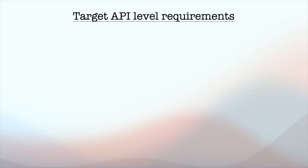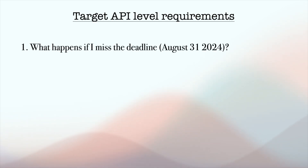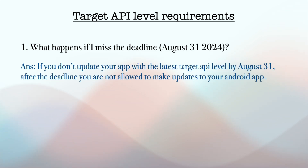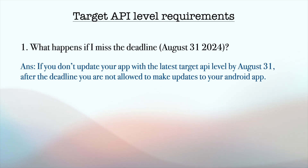Now let me answer some questions. What happens if I miss updating the app by the deadline? If you don't update your app with the latest target API level by August 31st, after the deadline you are not allowed to make updates to your app. In that case you may have to request or write to Google for help, so it is better to update before the deadline.